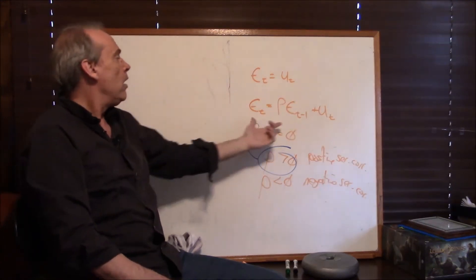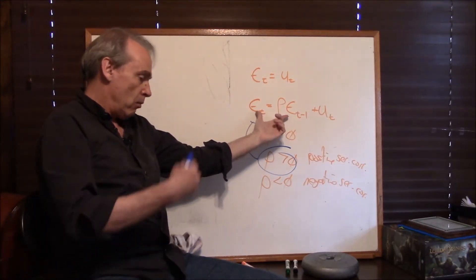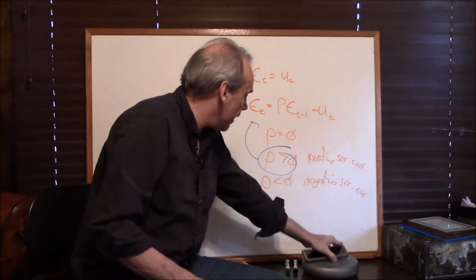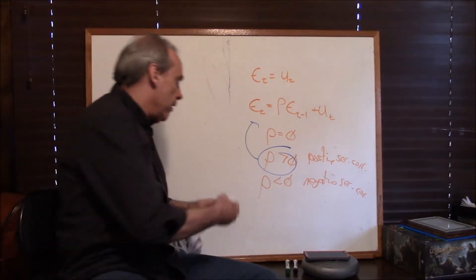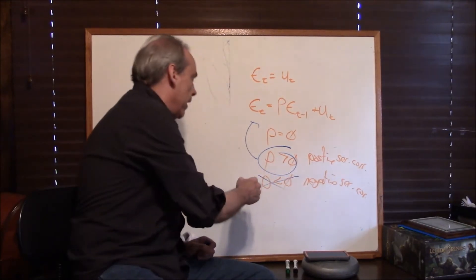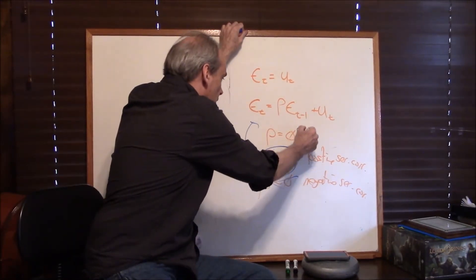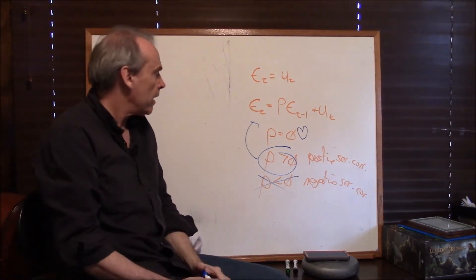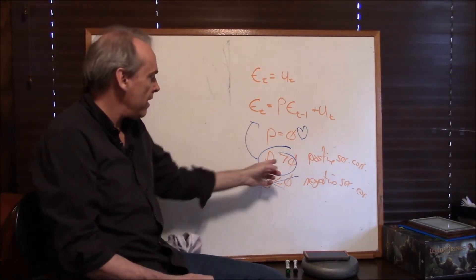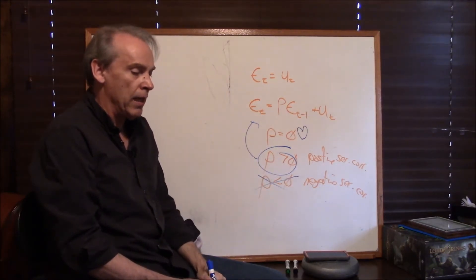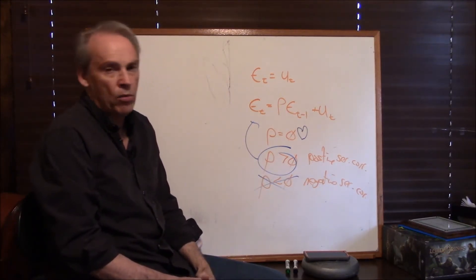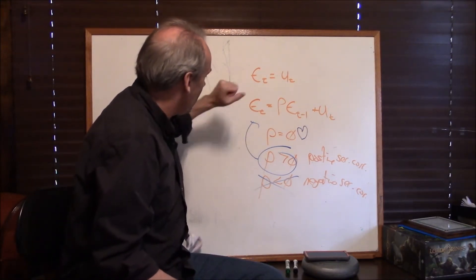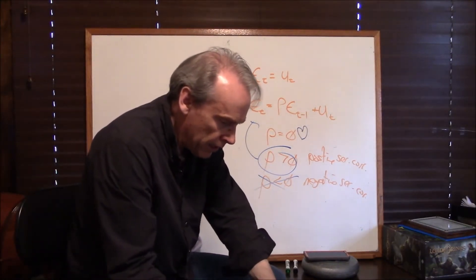So that's the simple background: are the error terms related to one another from one period to the next, and in a positive or negative way? We're not really going to worry about negative. We're hoping for no correlation — I'm hoping for that — and we're going to test to see if t-scores are artificially inflated.